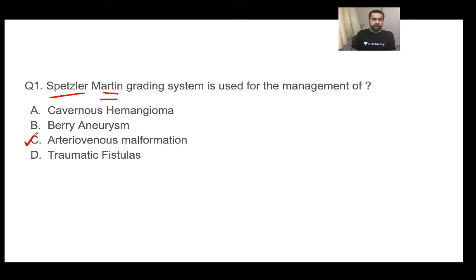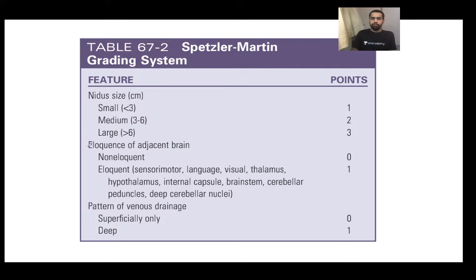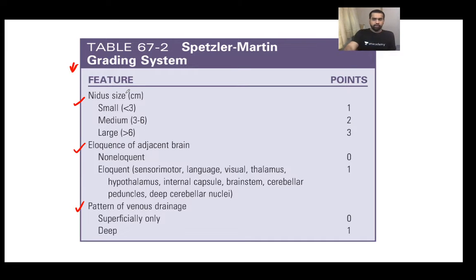The answer to this question is arteriovenous malformation. Whenever we have an arteriovenous malformation, we have to decide the treatment, and the decision of what treatment to go forward with is based on the Spitzer-Martin grading system. This is an important grading system — it's also given in your Sabiston. For neurosurgery, if you are thorough with your Sabiston and Schwartz, you are good to go for the NIMANS exam. The grading is based on nidus size, eloquence of adjacent brain, and the pattern of venous drainage.